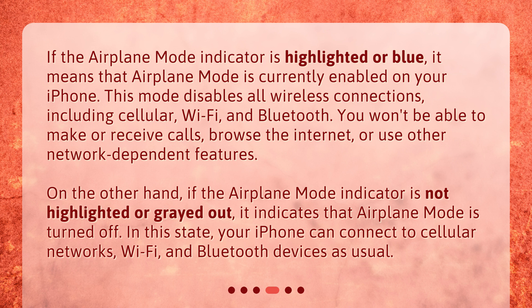On the other hand, if the airplane mode indicator is not highlighted or grayed out, it indicates that airplane mode is turned off. In this state, your iPhone can connect to cellular networks, Wi-Fi, and Bluetooth devices as usual.